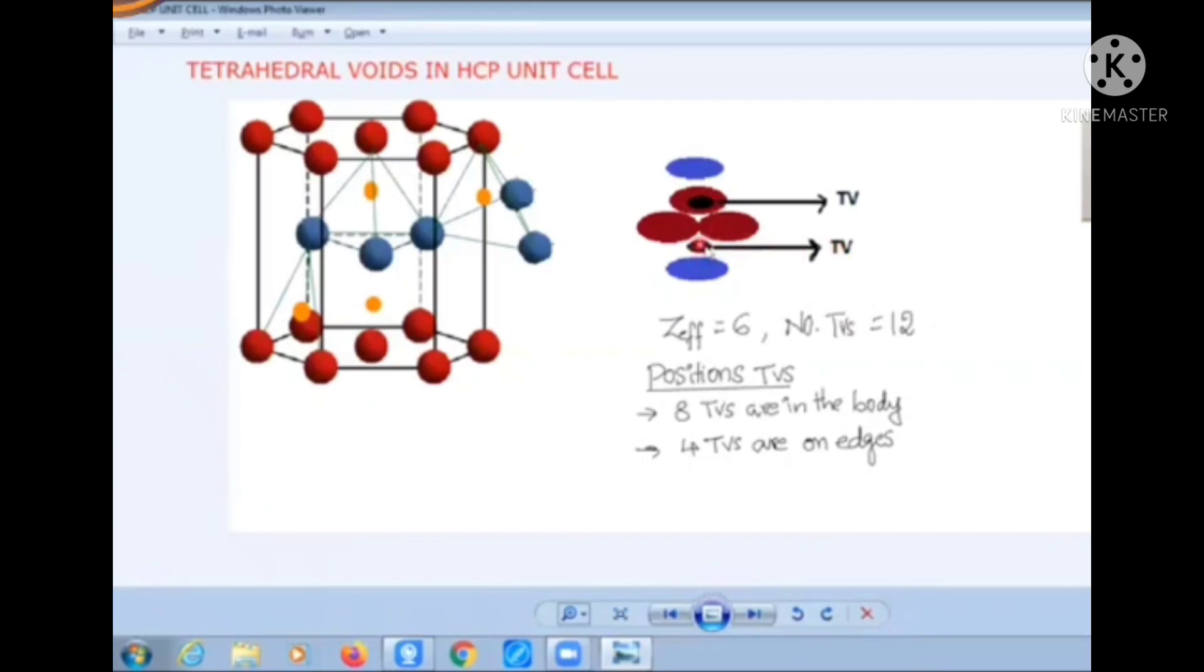Similar arrangements can be observed at different positions in an HCP unit cell. Here these two blue colored atoms are from two other unit cells. This is from this unit cell.